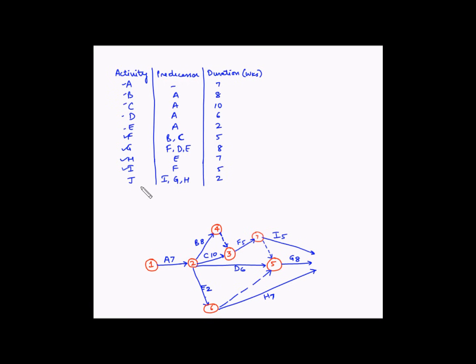The final activity is J, which is dependent on the completion of I, G, and H. We draw an ending node for I, G, and H and give it the number 8. From event 8 we draw activity J, which takes 2 weeks. Since J is the last activity of the project with no dependent activities, we draw the finish node and give it the number 9. This completes the network diagram for the project.